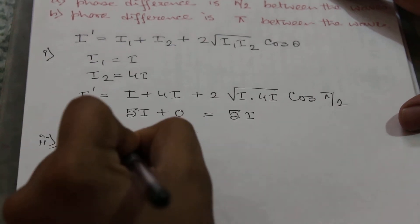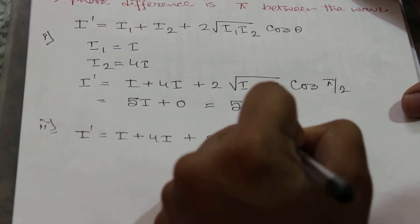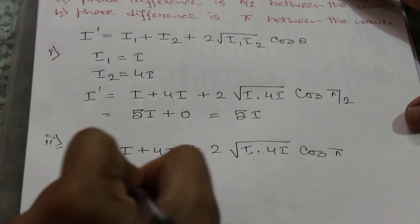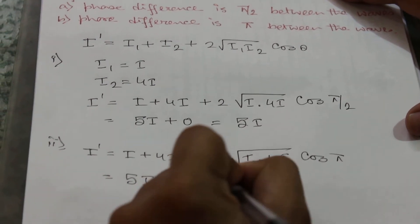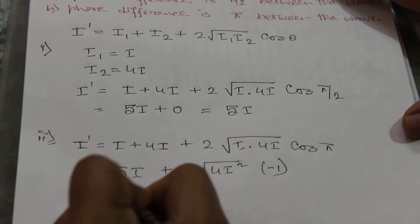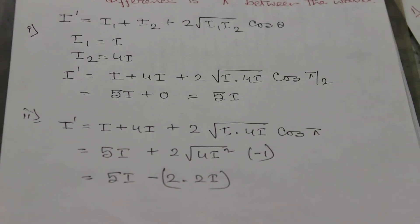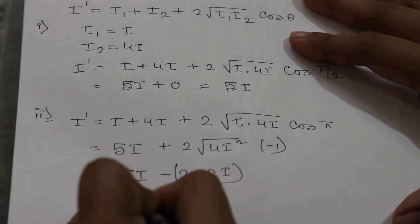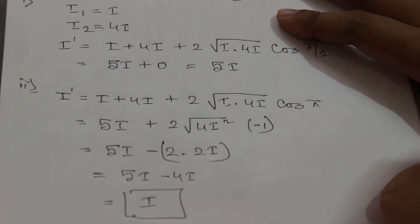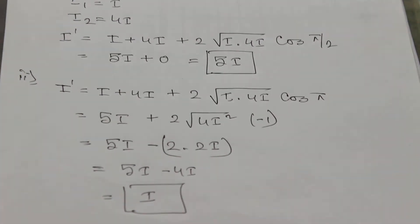In the second case, the phase difference is π. So I' = i + 4i + 2·√(i × 4i)·cos(π). Since cos(π) = −1, this becomes 5i − 2 × 2i = 5i − 4i = i. The resultant intensity for the second case is i.